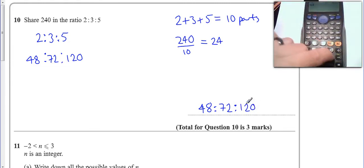I would just check 48 plus 72 plus 240—ooh, plus 120. That's how I use the delete button then. Gives me 240, and obviously we should have our total here.